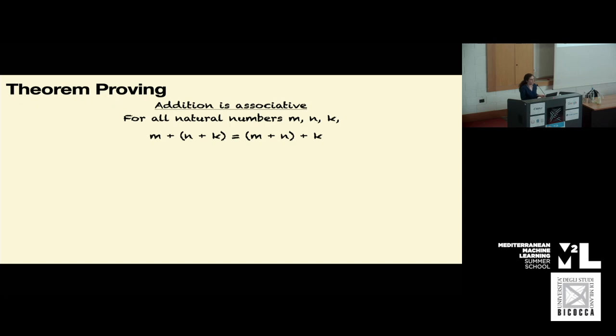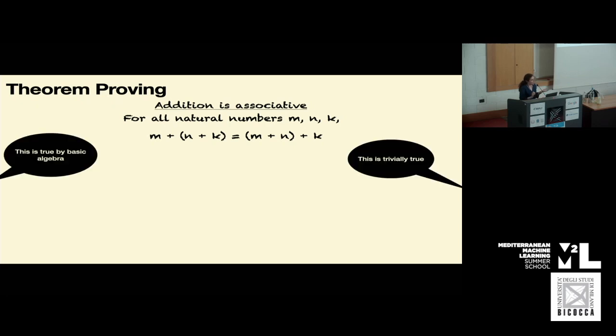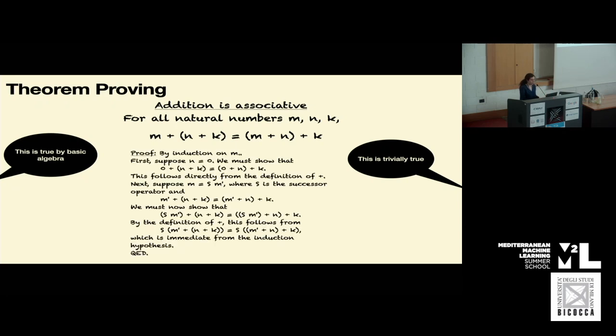We did this all the time in our math courses long ago. For example, a theorem could be that addition is associative. Or we can write it out a little more explicitly to capture what we mean by associativity. Looking at this, we can immediately think this is true by basic algebra, or this is trivially true. This is what we consider informal theorem proving.